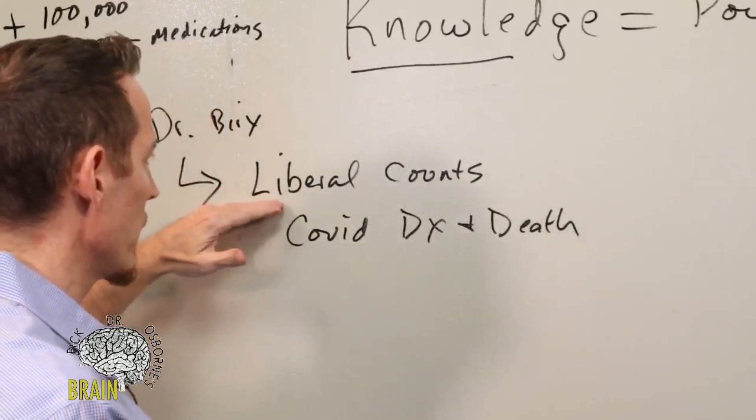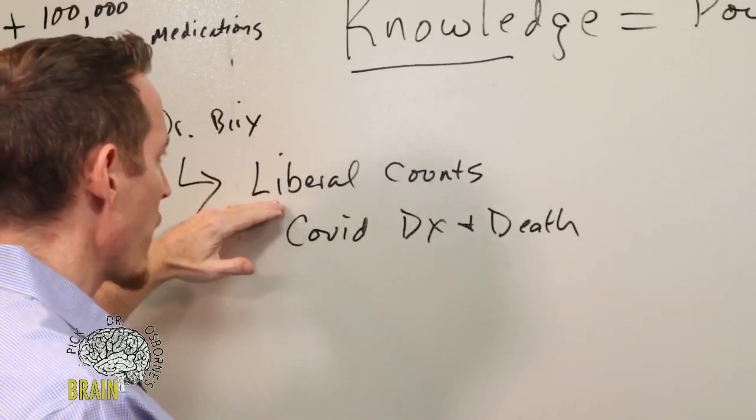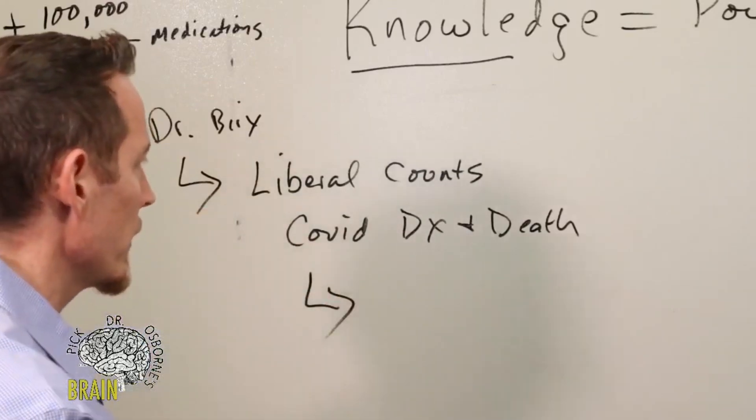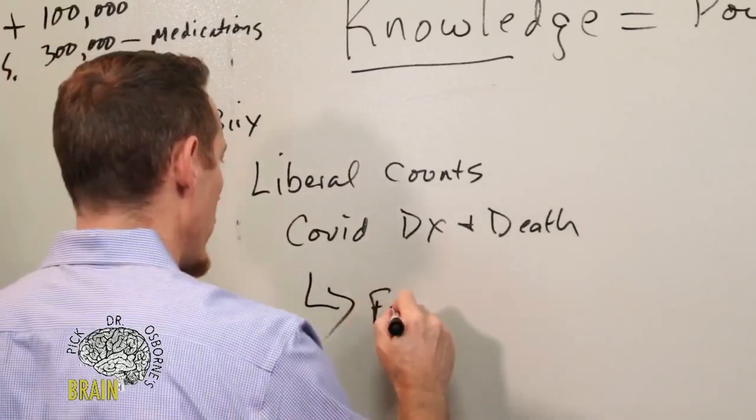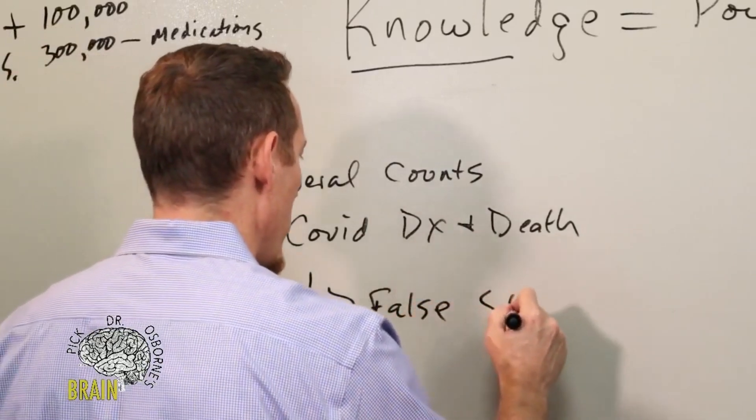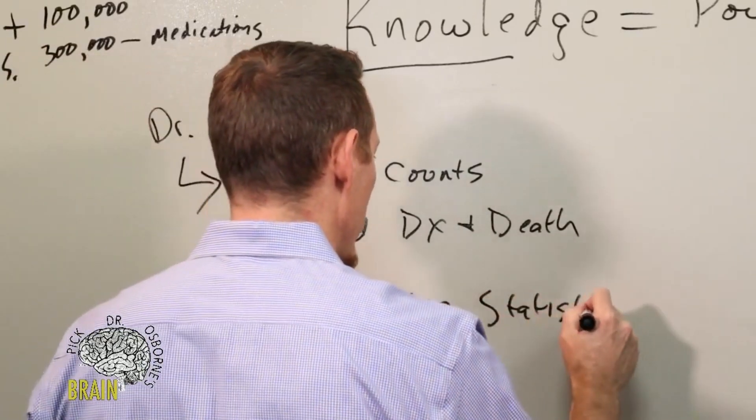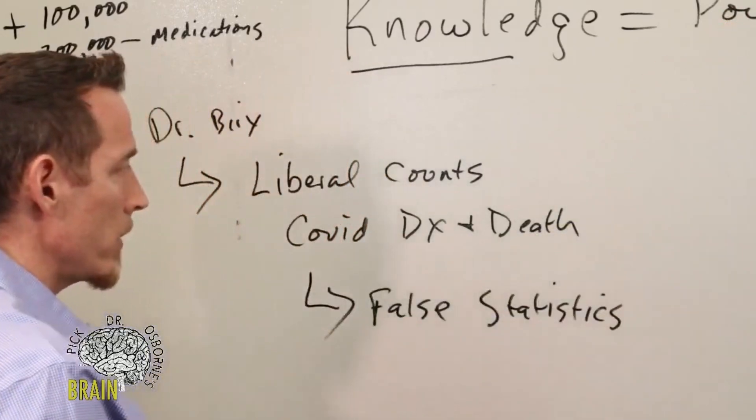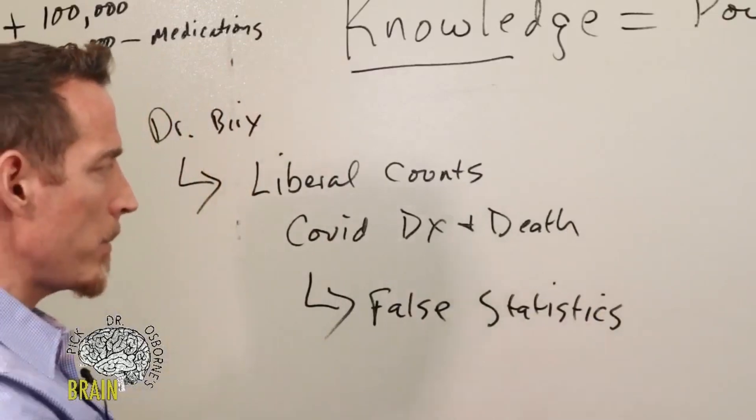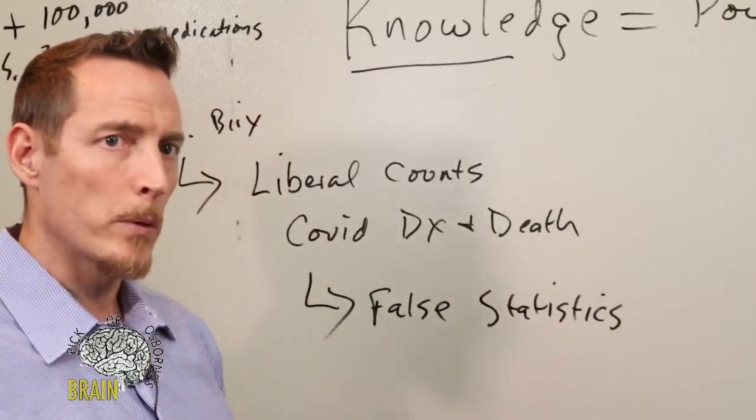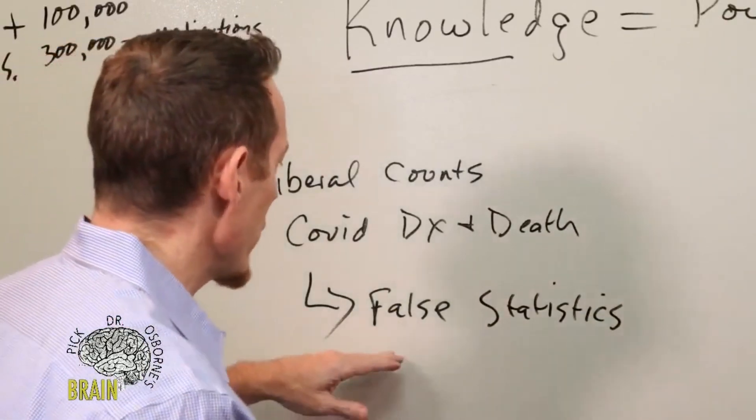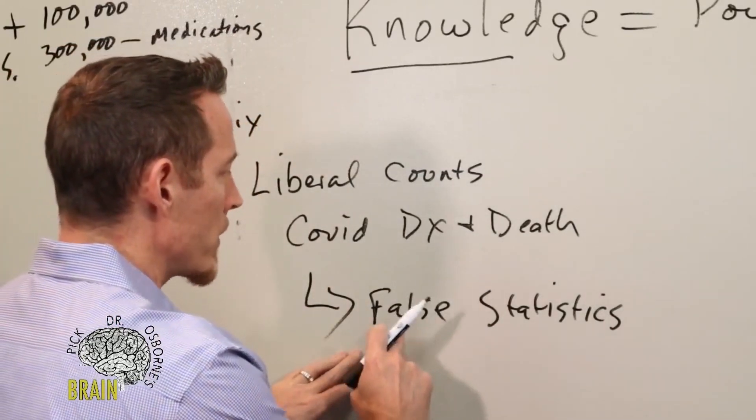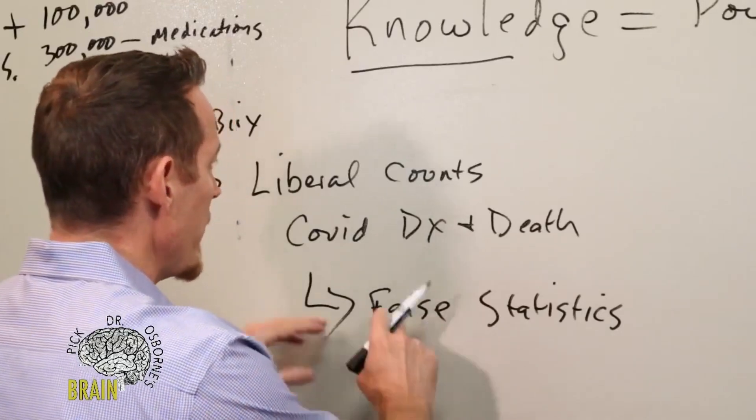What this is doing is leading to the potential for false statistics to be reported, and this is a problem because we're trying to base intelligent decisions. We're trying to be empowered to make good intelligent decisions about opening our government or keeping our government closed so that more people don't die unnecessarily. But in large part we're doing it based on statistics, and I'm not saying all the statistics are false, but some of those statistics are definitely false, and this is coming out of her mouth, not mine.